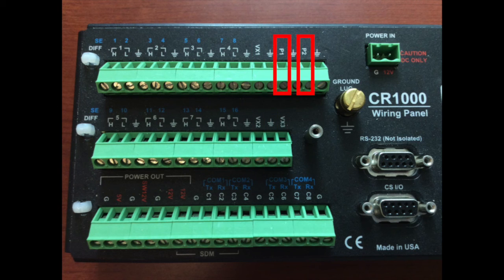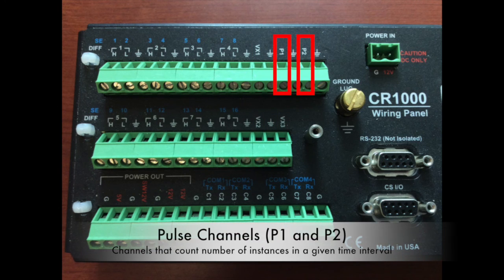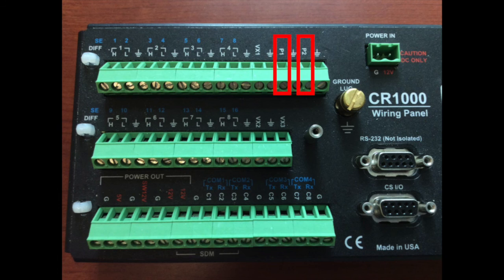There are two pulse channels, P1 and P2 on the data logger. For wind speed, it's a pulse count — every five seconds it counts the number of pulses that have come back and calculates the wind speed from there. Those are located in the top left.